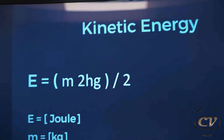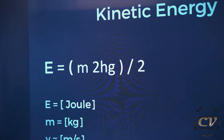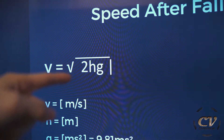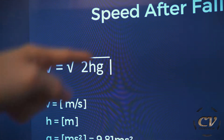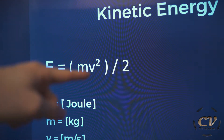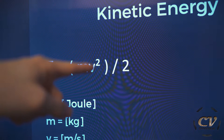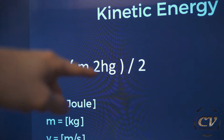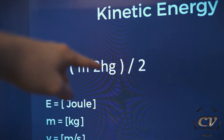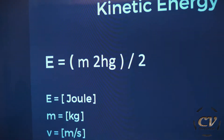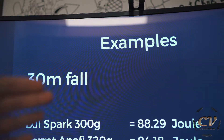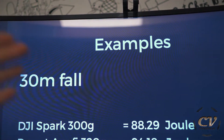This is part 2 of kinetic energy. I inserted the speed after fall formula — v equals the square root of 2hg — into the kinetic energy formula, and the square root just cancels out. So we are left with energy equals mass times 2 times h times g divided by 2, which simplifies nicely. This is pretty awesome, actually.